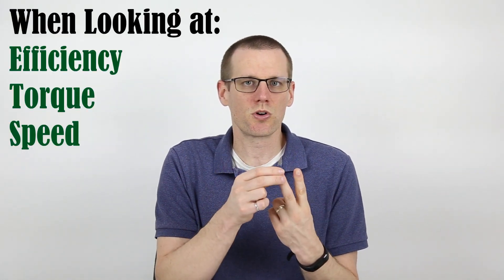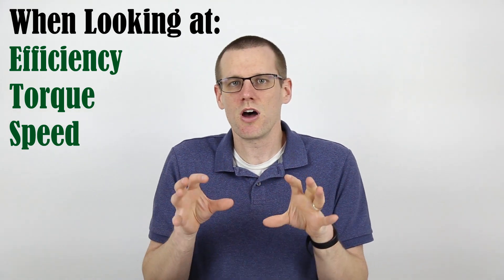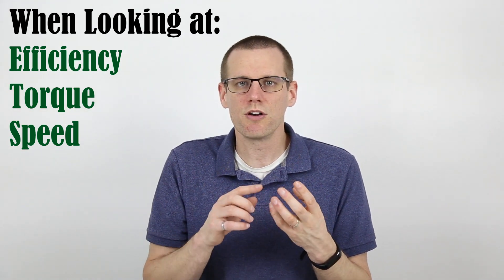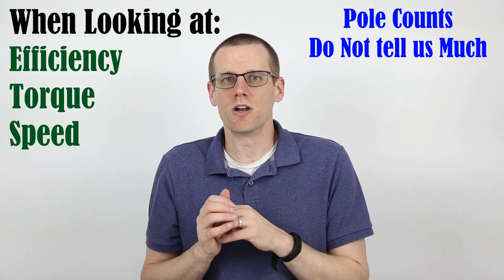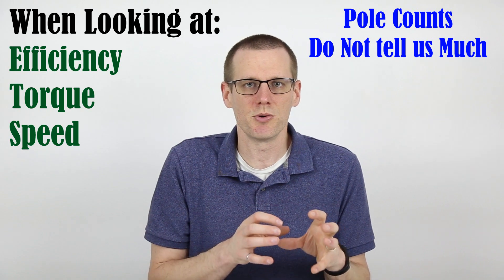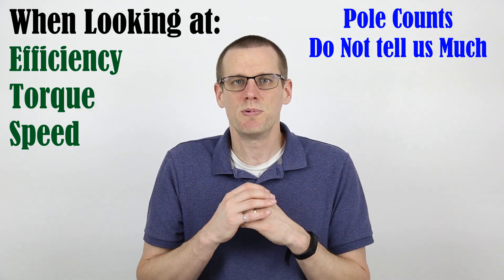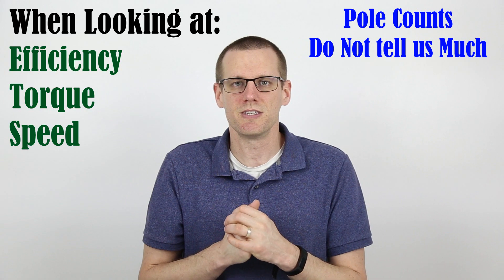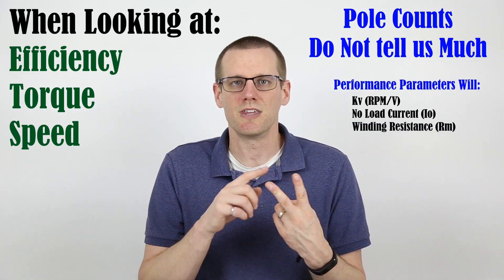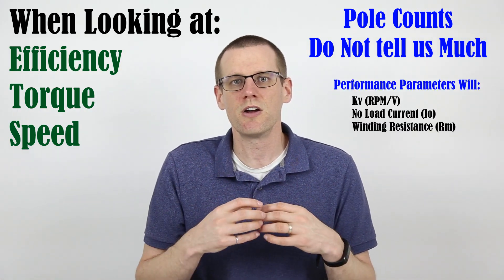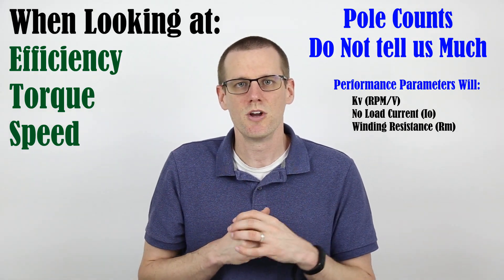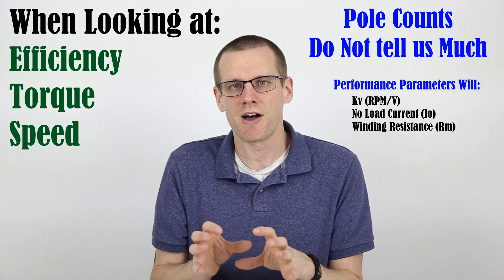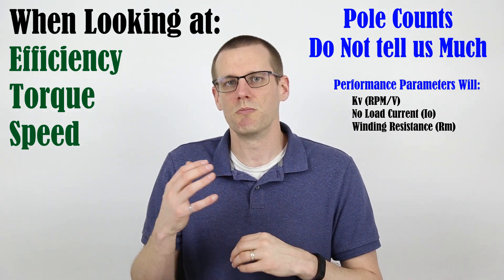So essentially at this point, we've covered three topics. When you're looking at efficiency, torque, or the speed of a motor, you cannot understand any one of these three items by looking at pole count alone. This does not do it. What is more going to influence the difference of these motors is going to be the values that we typically see, the KV value that we see, the IO value, which is the no load current, and also the internal resistance of the winding of that motor. These parameters are going to help identify which motor is going to be more efficient.